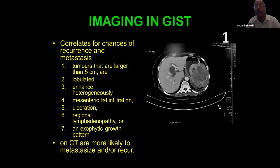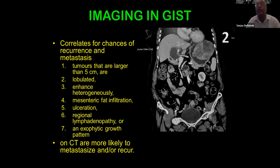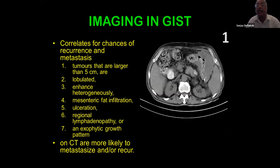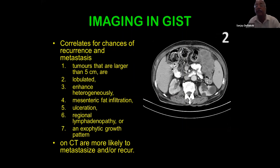An exophytic gastric GIST in an 83-year-old lady involved the diaphragm in the pre-cordial region. She had three stents previously and an incidental popliteal cyst. Another case showed linitis plastica-like wall infiltration with mesenteric fat infiltration on the next CT slice, indicating a poorer prognosis compared to a patient with a homogeneous lesion.